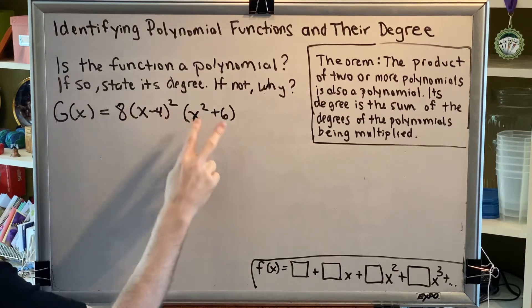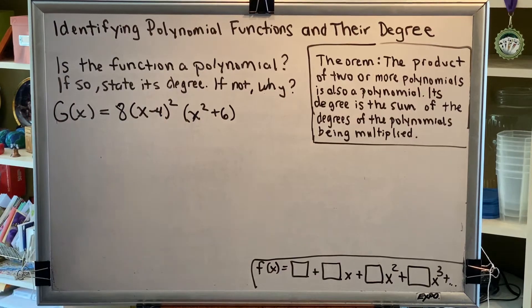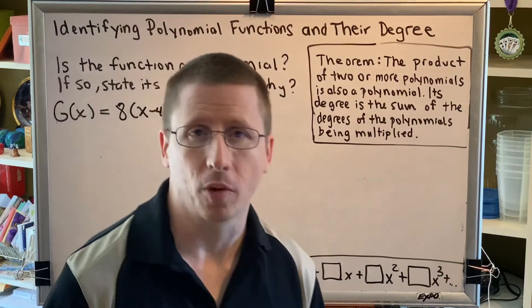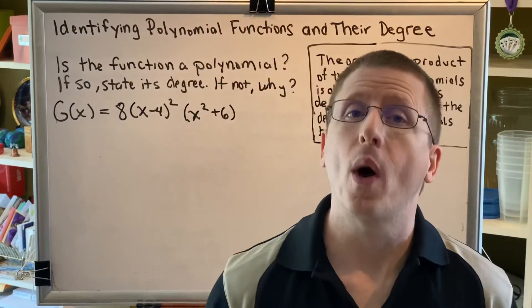and then take that result and multiply it by x squared plus 6 using the box method for multiplying polynomials. That would take quite a long time.